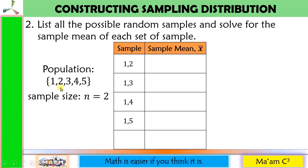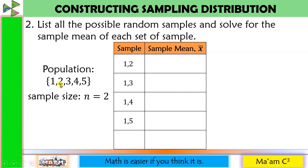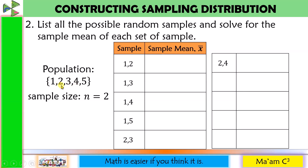Proceeding with 2: can we have 2,1? No, because we already have 1,2. Can we have 2,2? No, because this is without replacement — you cannot pick the same number twice. So we have 2,3; 2,4; and 2,5. Continuing with 3: we have 3,4 and 3,5. And finally, 4,5.